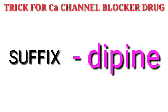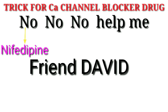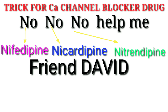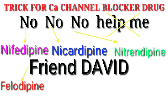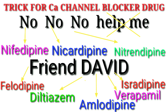So now coming to the trick — No, No, No, Help me, Friend David. N is for Nifedipine, another N is for Nicardipine, then the last N is for Nitrendipine. 'Help me' does not make any sense. F is for Felodipine. Then David: D is for Diltiazem, A is for Amlodipine, V is for Verapamil, I is for Isradipine. And the last letter of David does not make any sense — it is just to complete the word David.